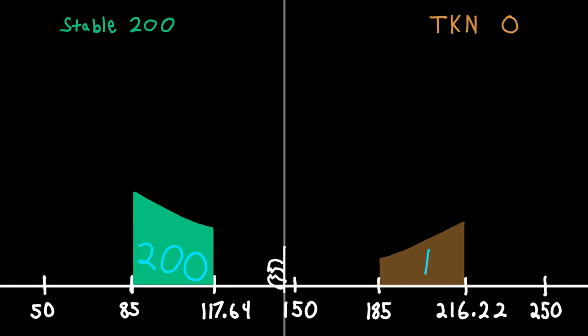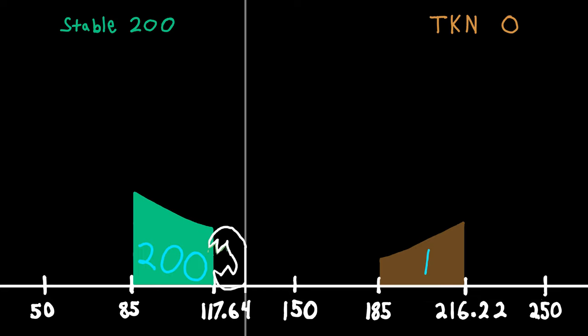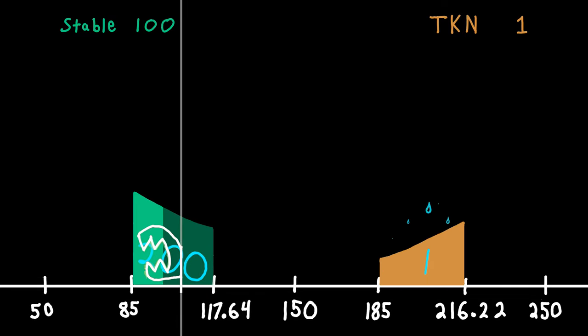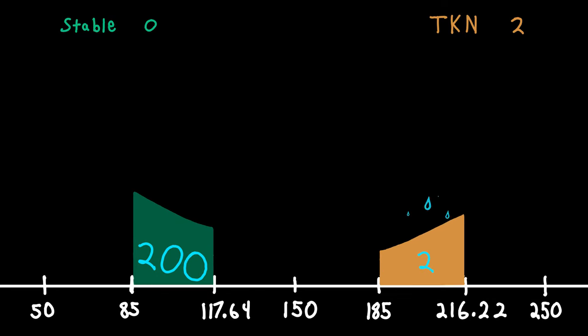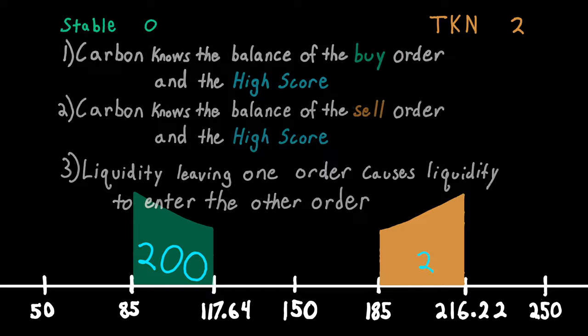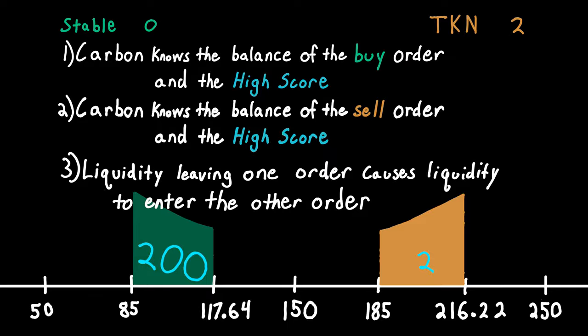If more TKN is added to the sell range, there will be a new high score. Because there is a new high score, each additional increment of stable, which is spent on TKN, will see that TKN evenly distributed across the whole sell range, making the entire range more liquid.